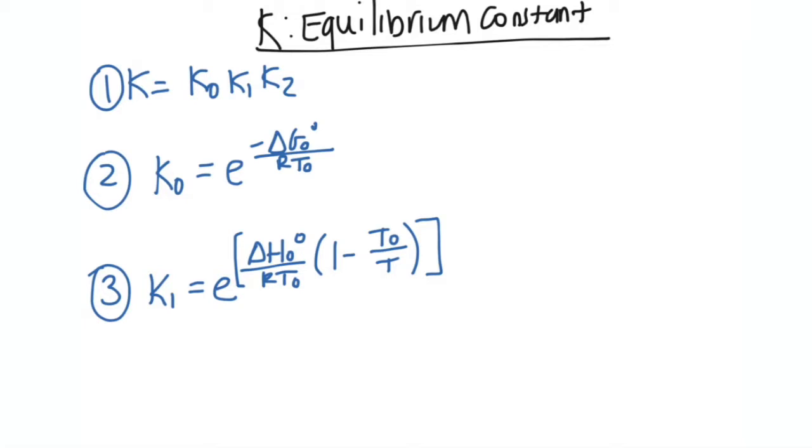The first one is the general equation that you're always going to go back to. You see K is equal to K0·K1·K2, so basically we're going to find K0, K1, K2 if we do have to find them, and then plug those in, multiply everything together and get our K.